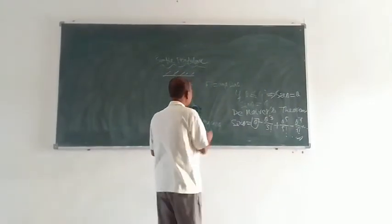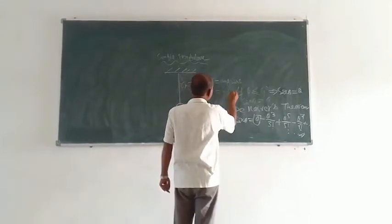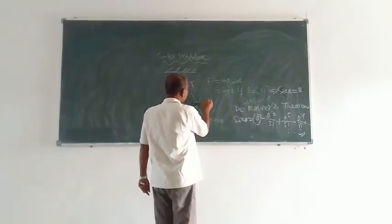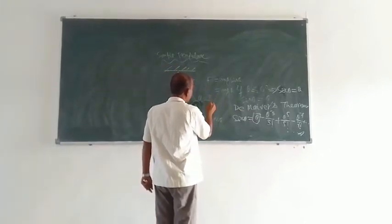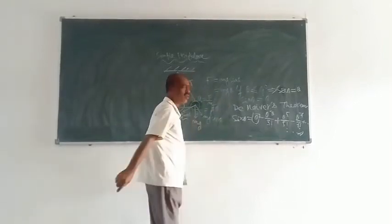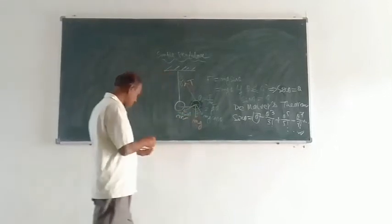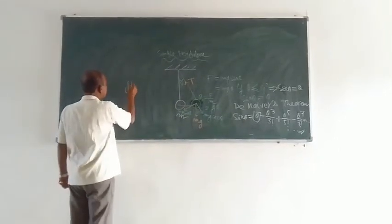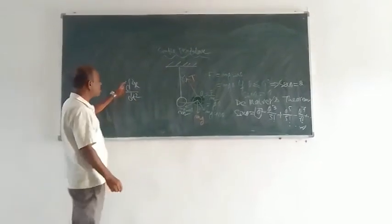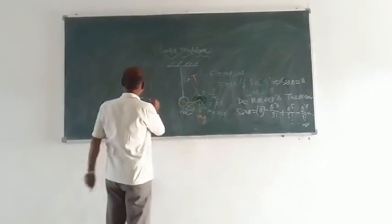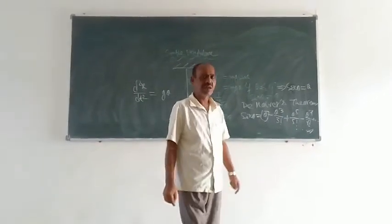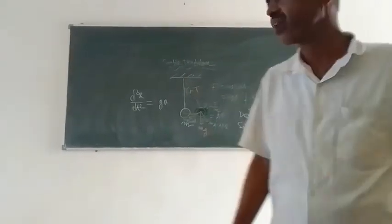So the restoring force is mg theta. The acceleration is equal to force divided by mass, so force divided by mass becomes g theta. This acceleration can be written as d²x/dt², where x is the displacement and t is the time. So d²x/dt² equals g theta. But you have to write this g theta with a negative sign, because the restoring force acts in the opposite direction to displacement.